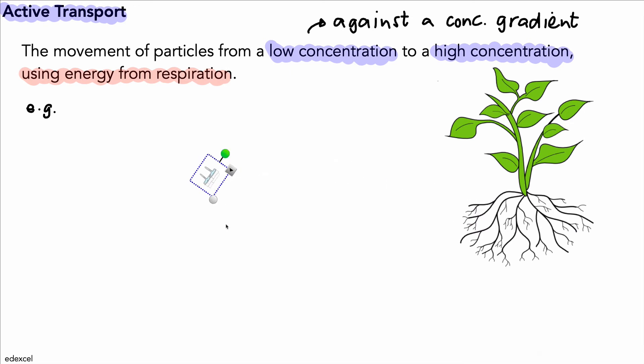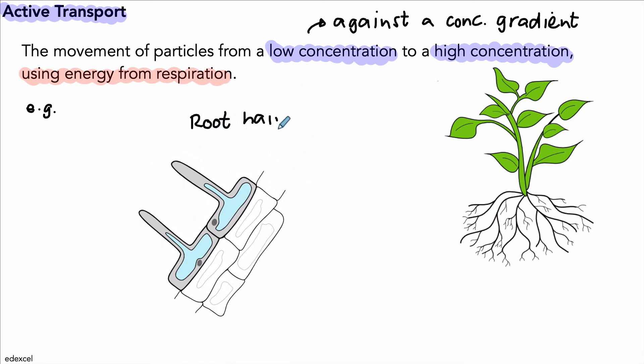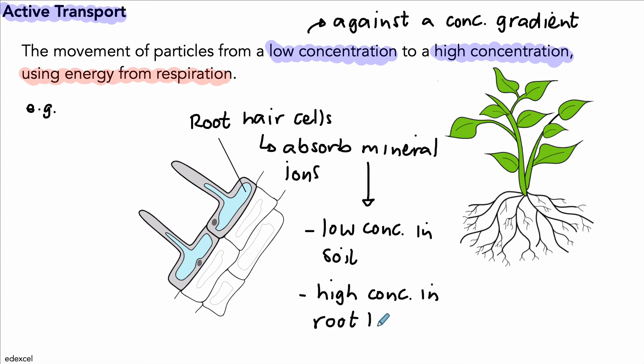One example is root hair cells. They have the job of absorbing water and mineral ions from the soil. The issue with mineral ions usually is that they're in low concentration in the soil and in higher concentration in the root hair cells. We can't have diffusion because we would be going against the concentration gradient. So we need to use active transport and energy from respiration to transport those mineral ions into the root hair cells.